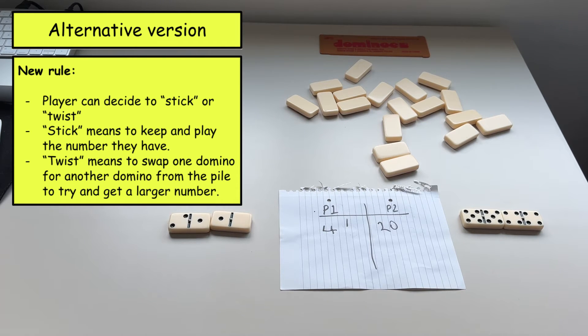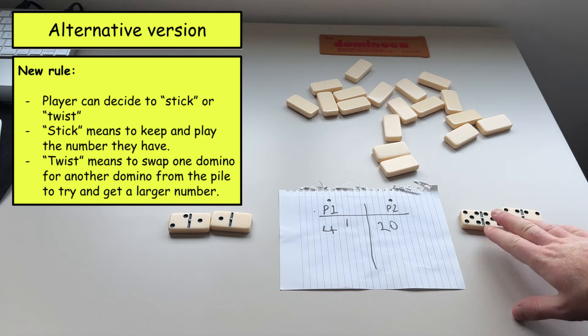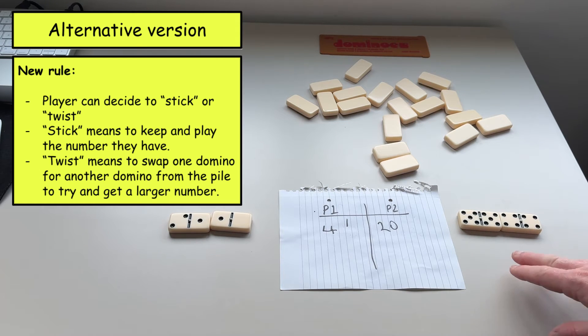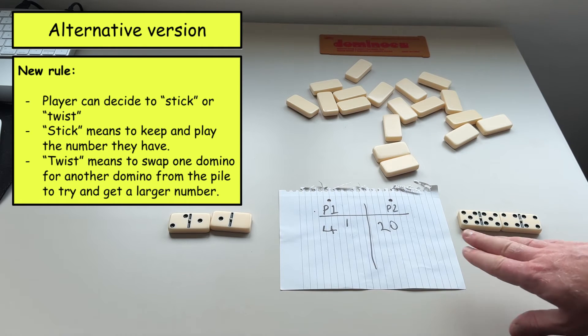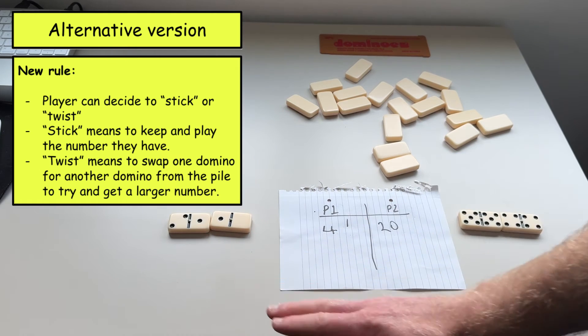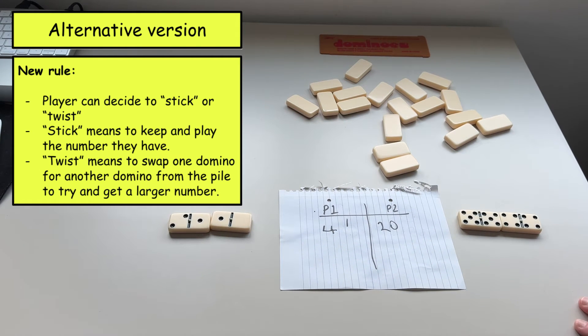Now the new rule that you can introduce into the game is basically stick or twist. So if they stick then what that means is they are happy with the number that they have and they are going to play their dominoes. So player two here has quite a high number so they're probably going to want to stick. They're not going to want to take this risky chance that I'm about to describe. So they're going to stick player two because they have quite a high number.